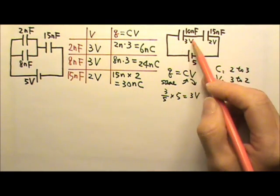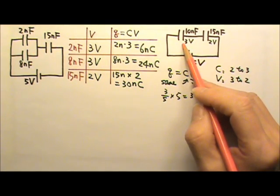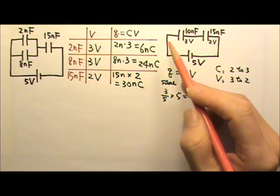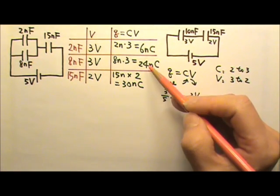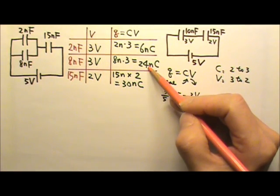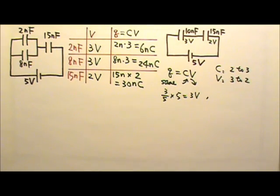The 30 nanocoulombs is shared by those two parallel capacitors. Adding 6 and 24 gives 30, so everything checks out.